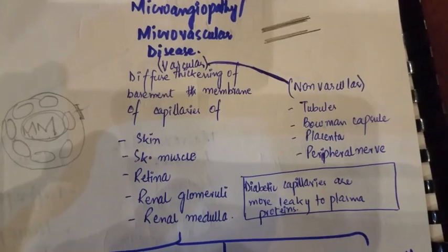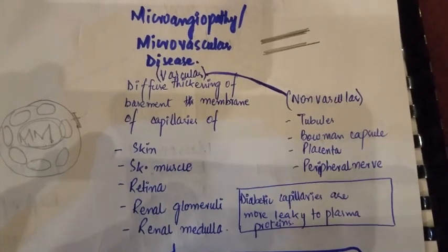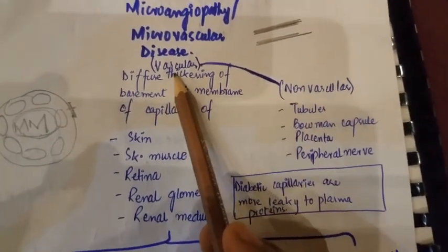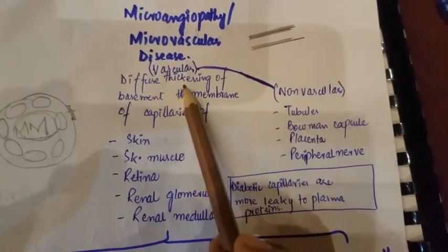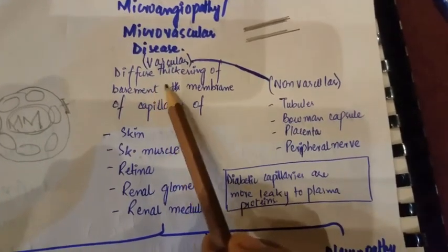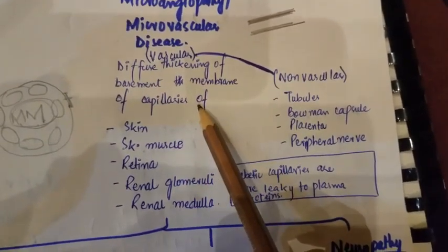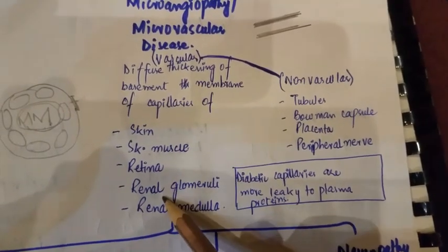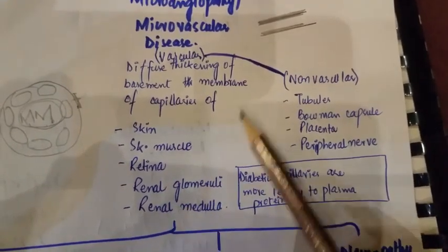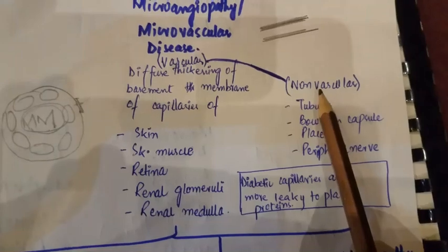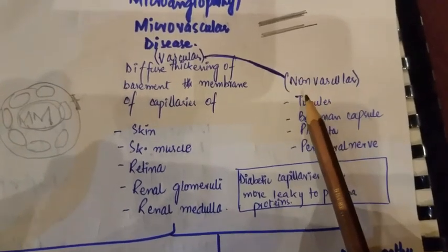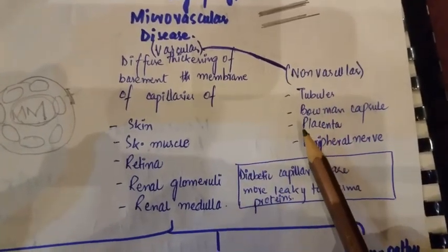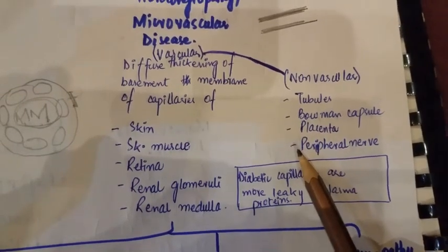Microvascular disease is basically divided into two parts: the vascular portion and the non-vascular portion. The vascular portion involves diffuse thickening of the basement membrane of capillaries of the skin, skeletal muscles, retina, renal glomeruli, and renal medulla. The non-vascular portion involves diffuse thickening of the tubules, Bowman's capsule, the placenta, and the peripheral nerve.